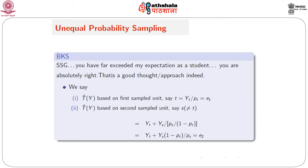T-hat-y based on the first sampled unit, let's call it E1, is yt over pt. T-hat-y based on the second sampled unit s, not different from t, requires the information about who is second (s) and who was first (t). Then we can think of ys over ps over 1 minus pt as the estimate of the population total for the truncated population — all but t. That takes care of ty minus yt, and so we add back yt. So it is yt plus ys times etc., simplified, that we call E2, the estimator based on the second observation but using the knowledge about the first observation — that comes in the form of yt as well as pt.